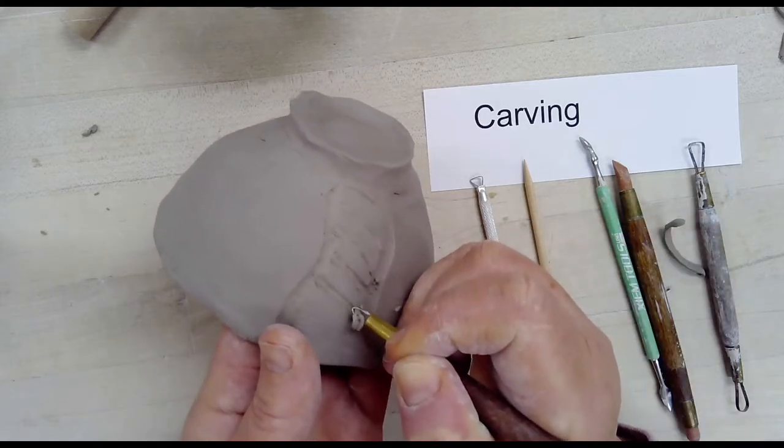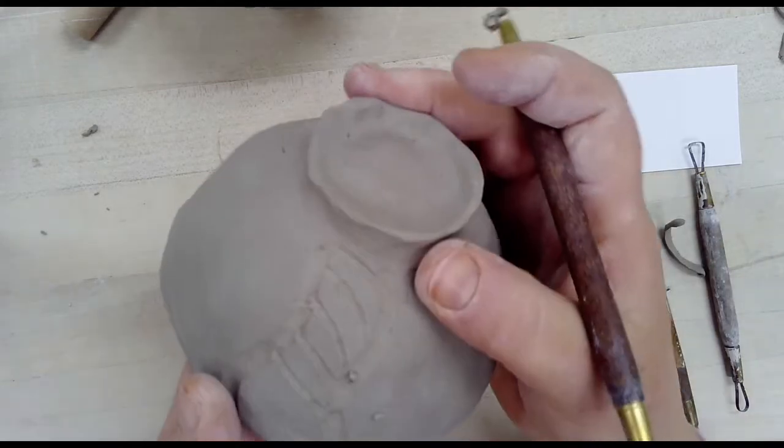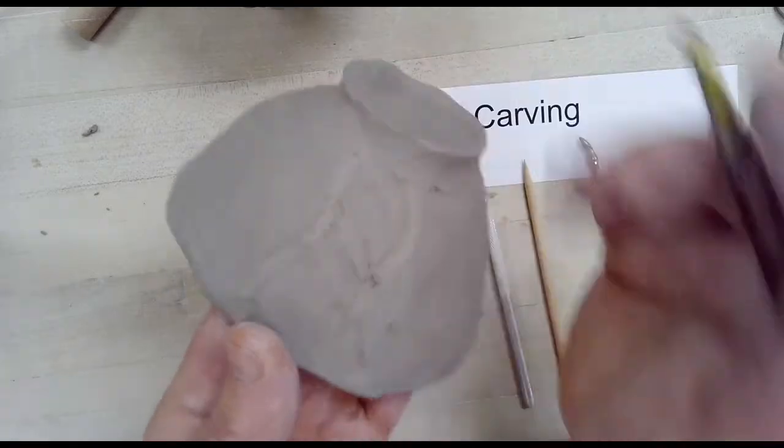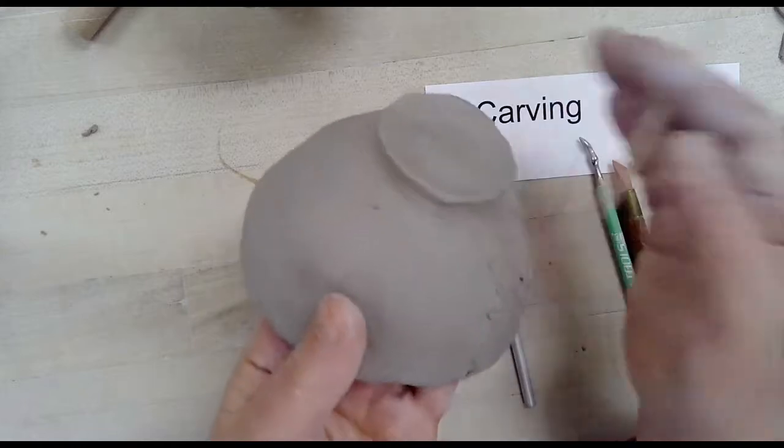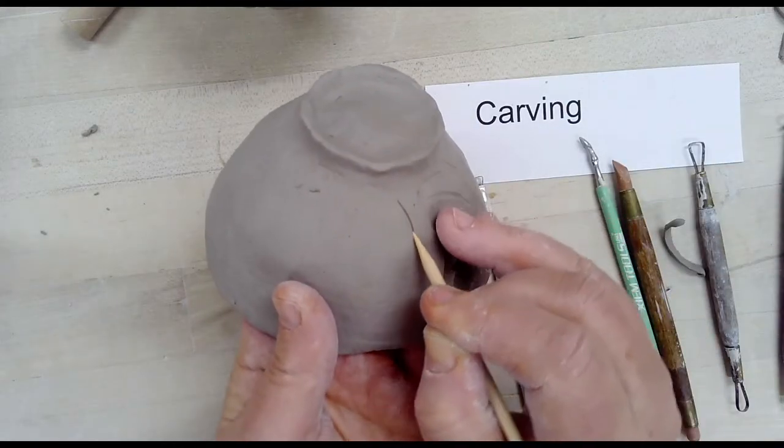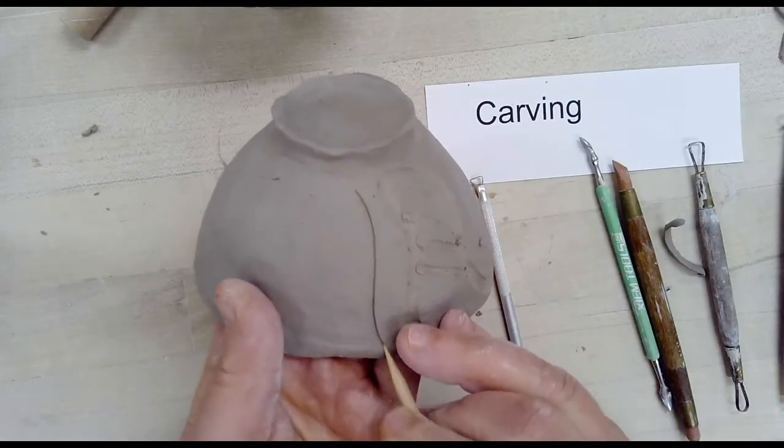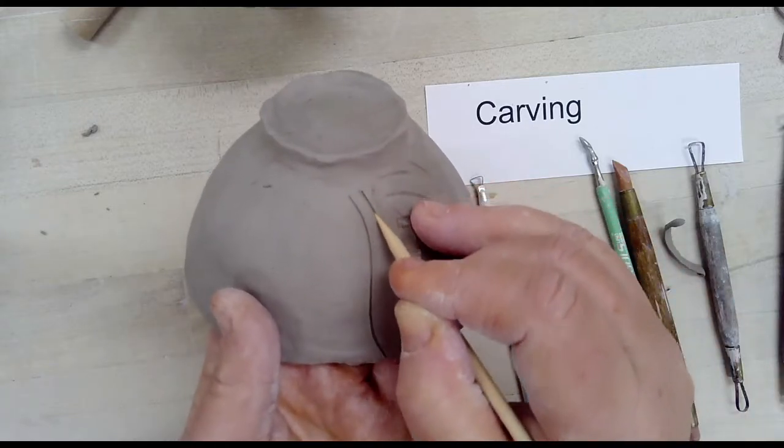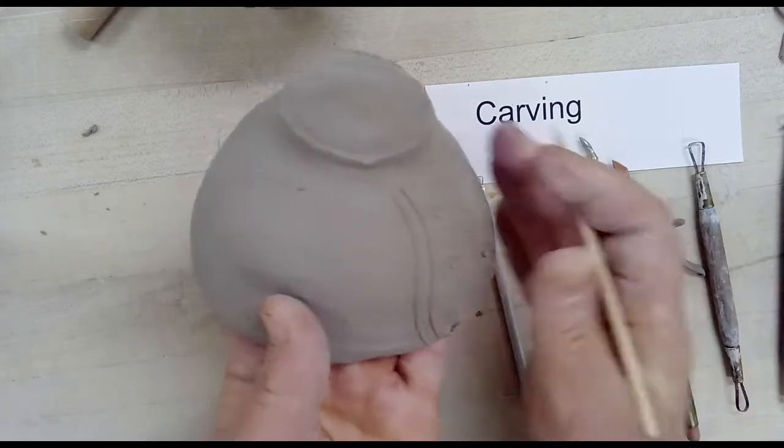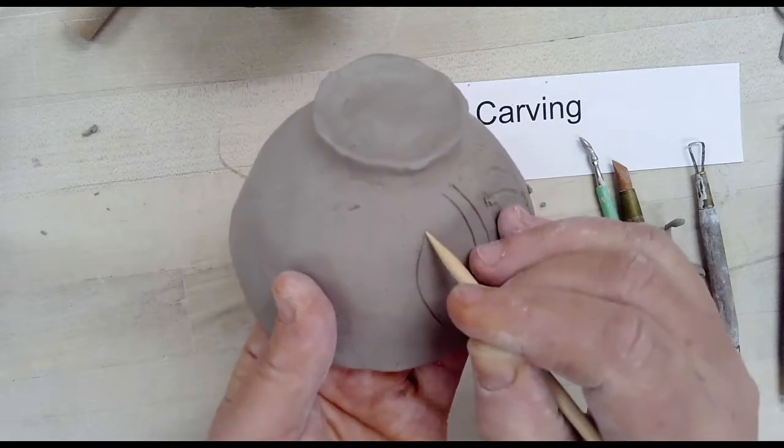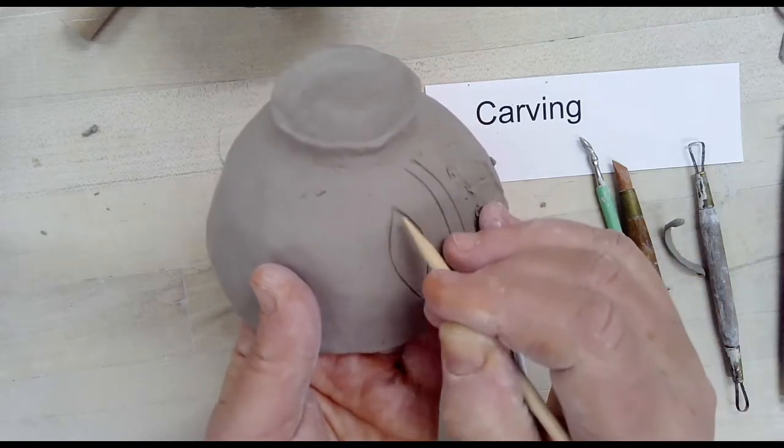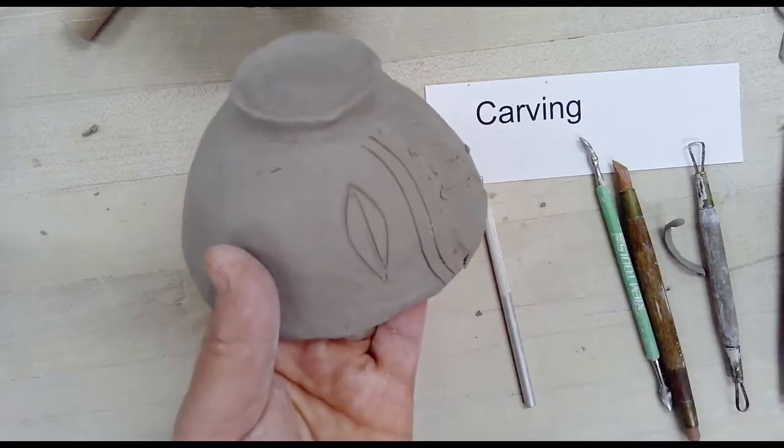I like to hold my bowl fairly close to my body when I'm carving so I have more control over the tools. If you're looking for a very thin line, these wooden pointed sticks will give you the thinnest line. They are like sharpened pencils without the graphite. These are also good tools for carving the name into the bottom of your tea bowl as well.